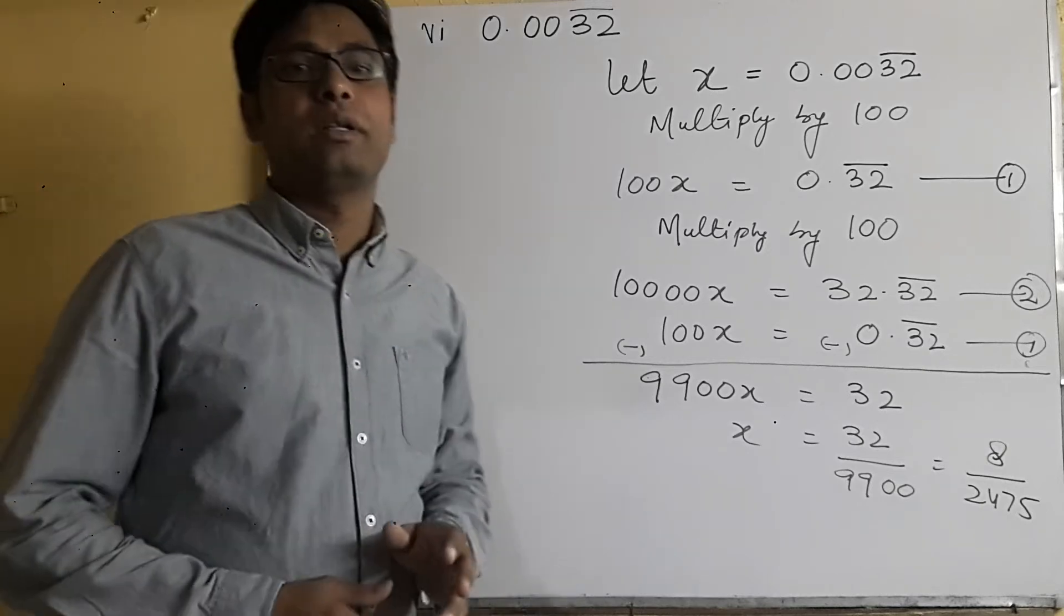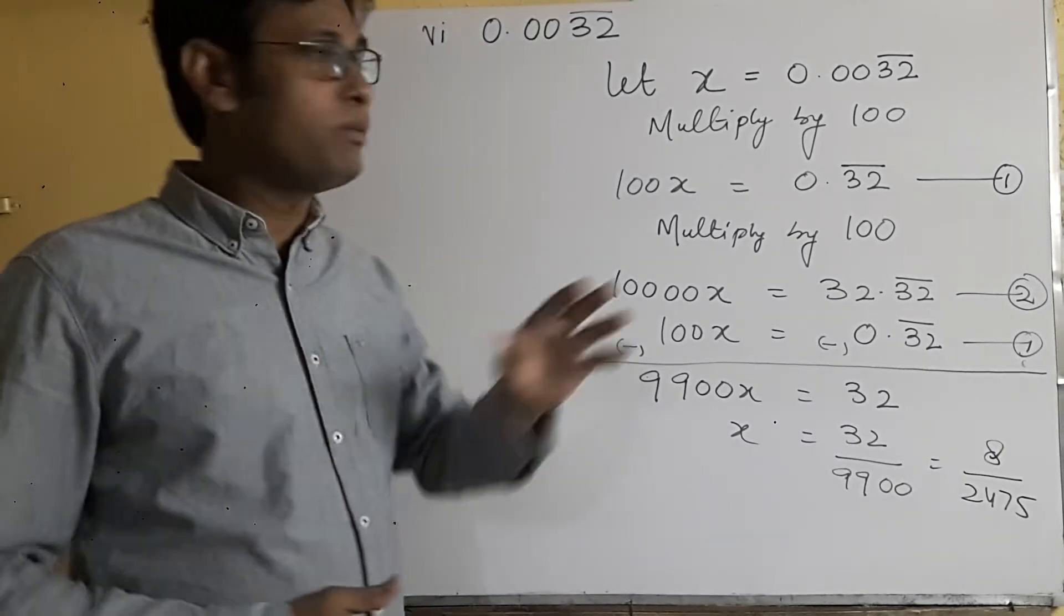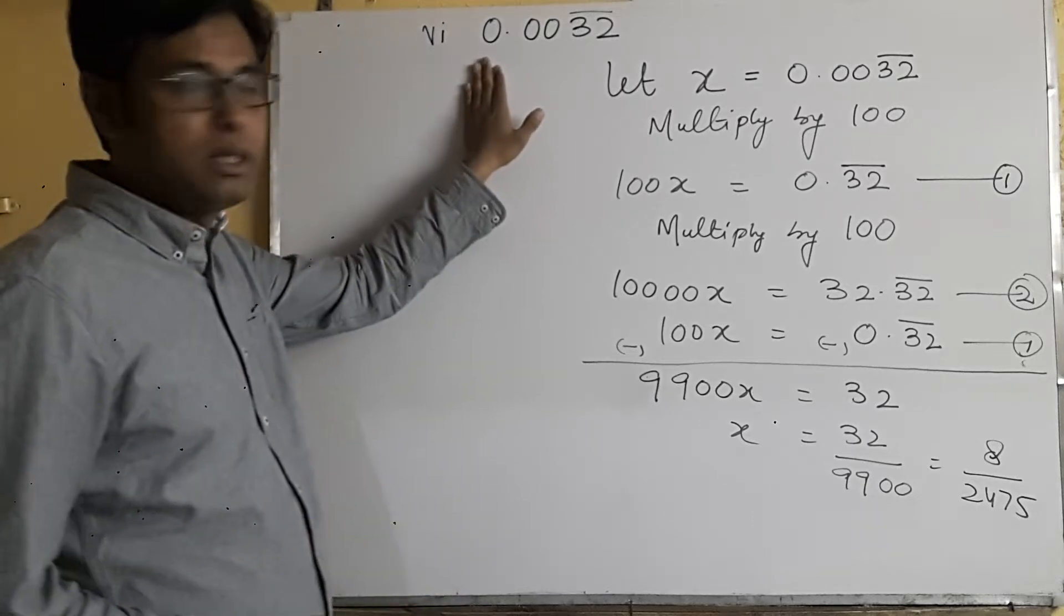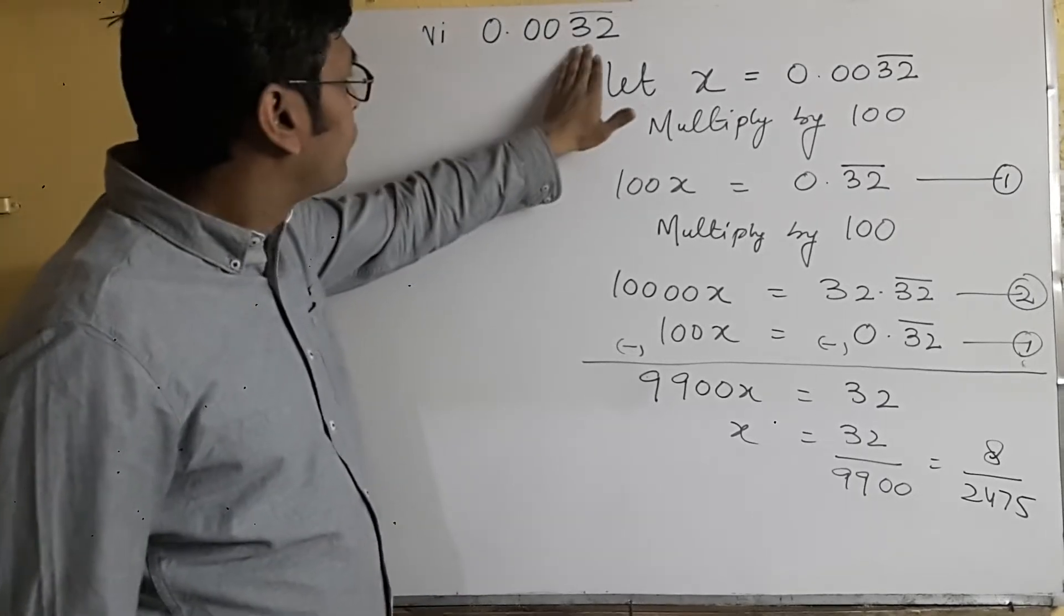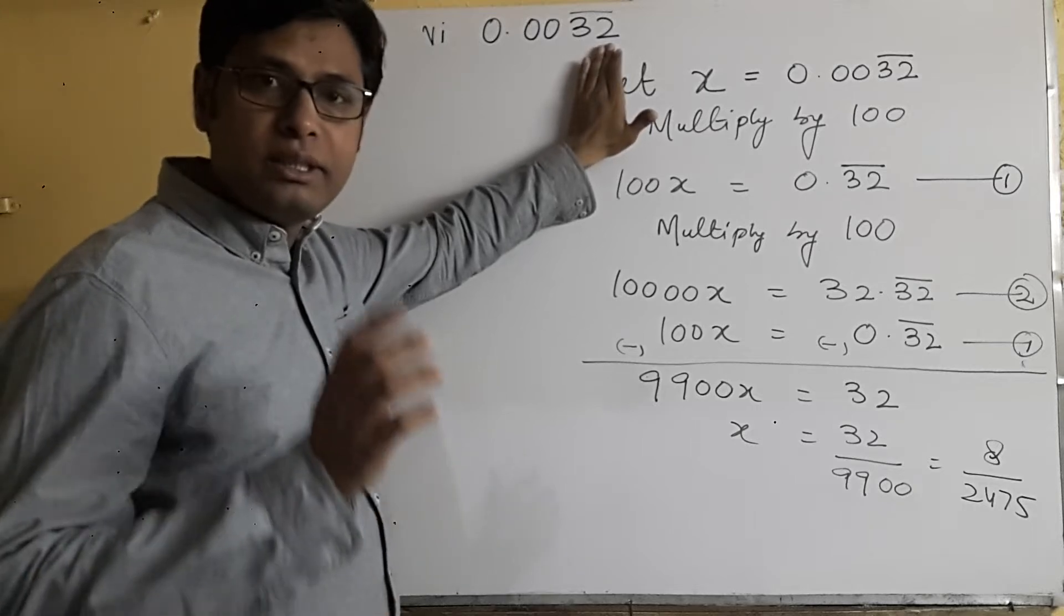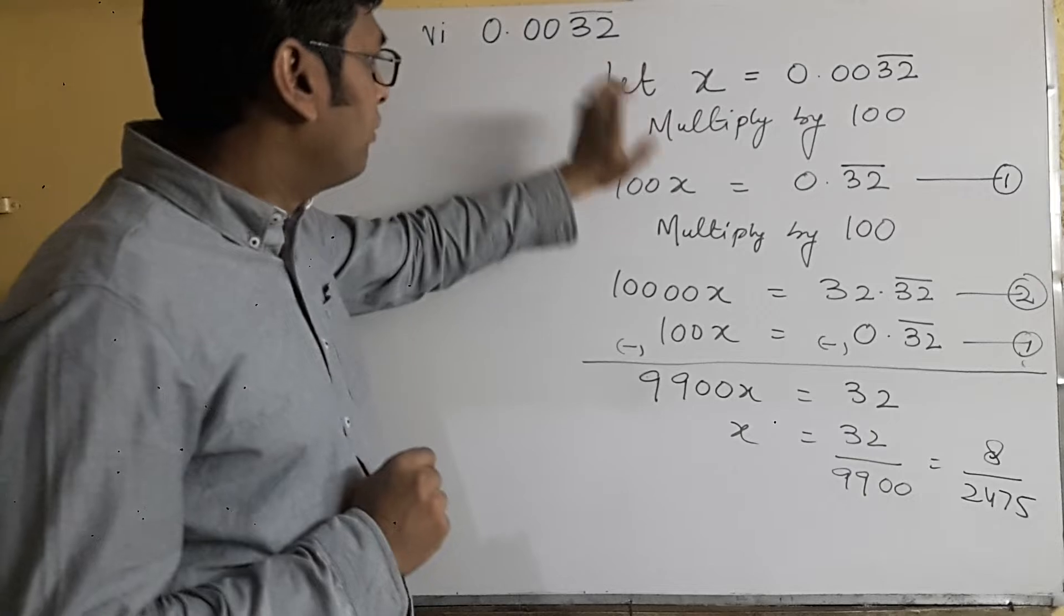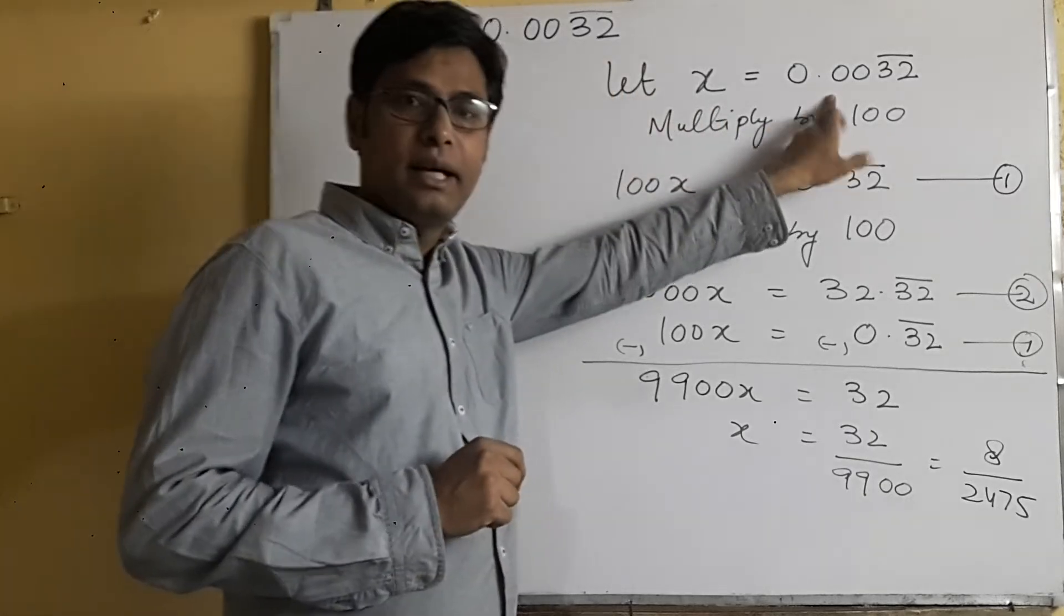Now students, we'll do the extra questions which I gave you. This is the sixth part of that. The question is 0.0032 bar. You can see that the bar is only on 32. We'll take this as x.